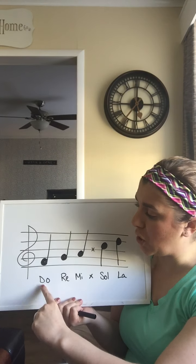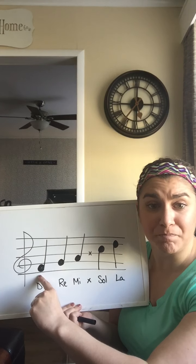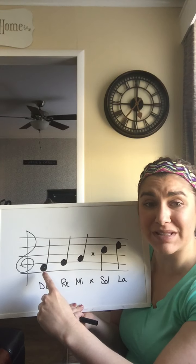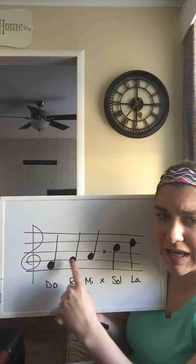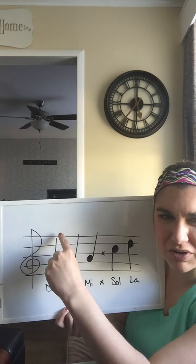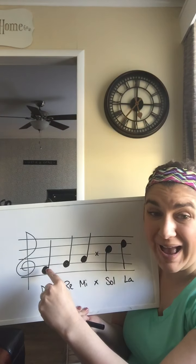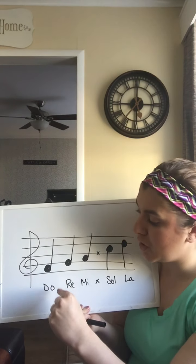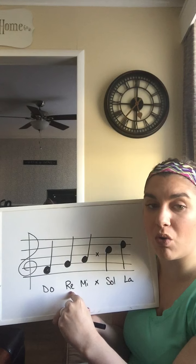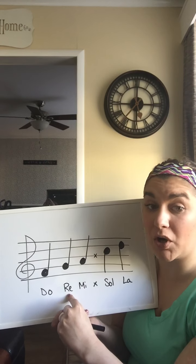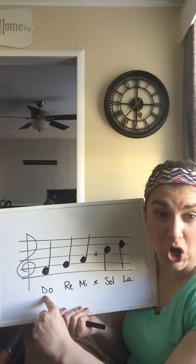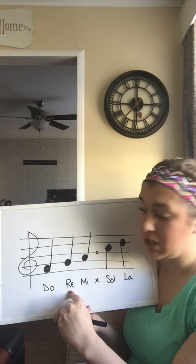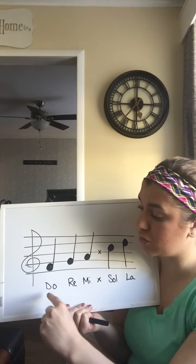So if I'm on Do, Do is the bottom pitch for now. Do could start somewhere else, but for right now Do starts on this bottom space. Do you see how Do has a line that goes through it, but the note head — the big circle that's colored in — is in a space? Re is the next note over. Re is the neighbor of Do, as if Do were me and the next door neighbor would be Re.